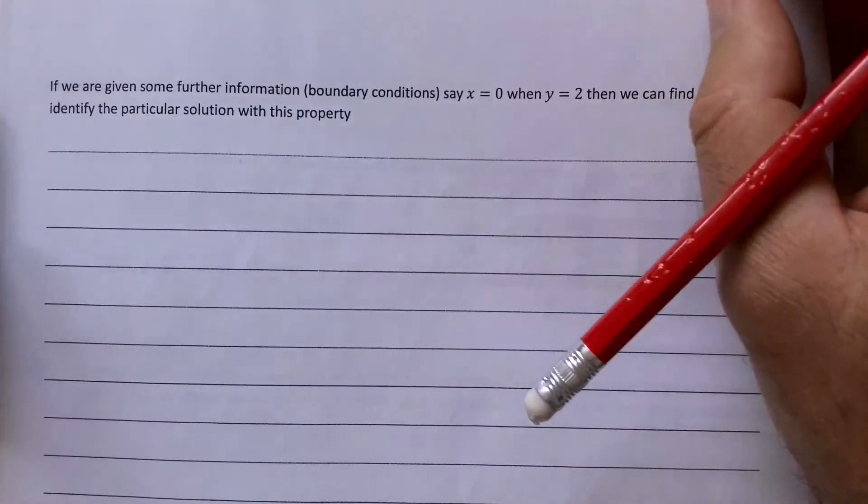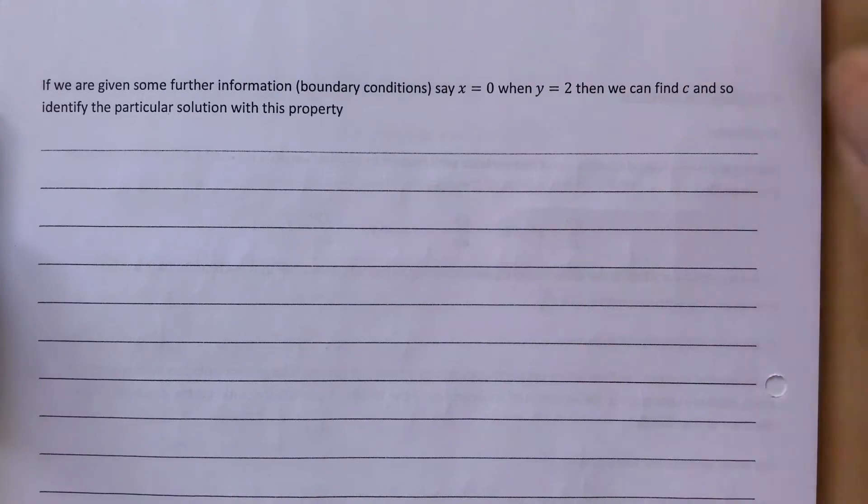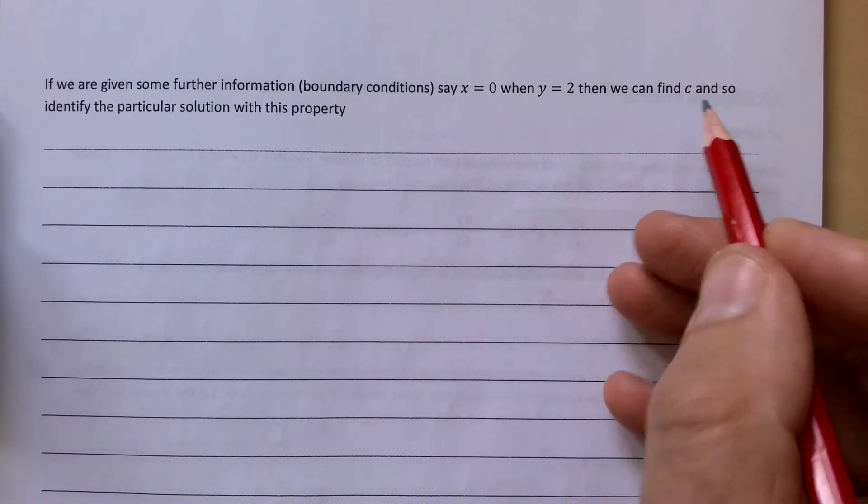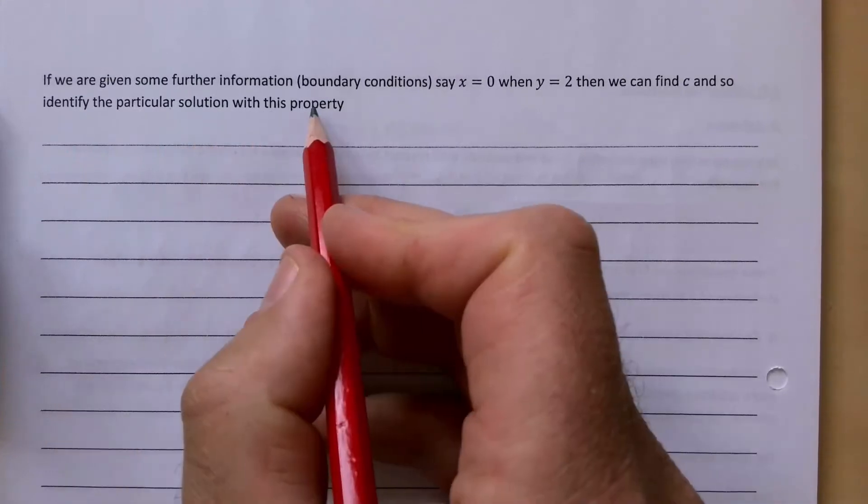If some further information, for example boundary conditions, is given, say x = 0 and y = 2, then we can find the c and identify the particular solution with this property.